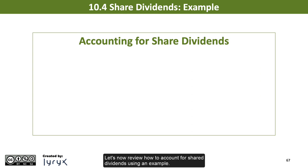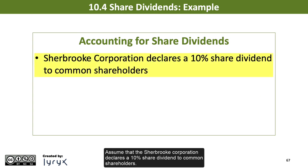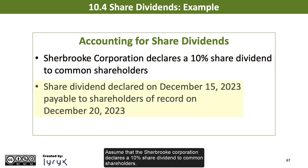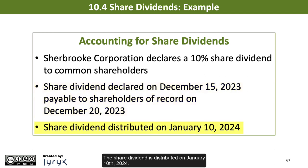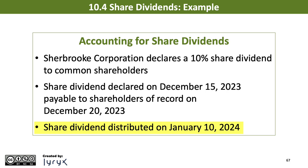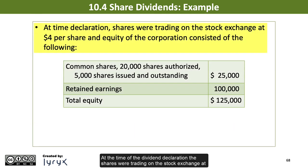Let's now review how to account for share dividends using an example. Assume that the Sherbrooke Corporation declares a 10% share dividend to common shareholders. The share dividend is declared on December 15, 2023, payable to shareholders of record on December 20, 2023. The share dividend is distributed on January 10, 2024. At the time of the dividend declaration, the shares were trading on the stock exchange at $4 per share and the equity of the corporation consisted of the following.